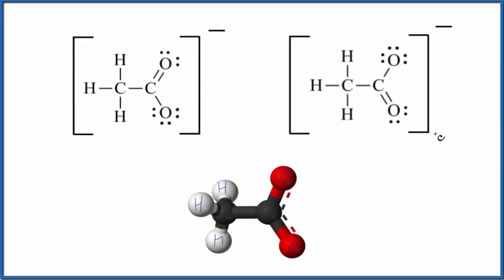In this video, we'll look at the resonance structures for CH3COO-. This is the acetate ion. So for acetate itself, we have CH3COOH, and this H right here, that's what it loses, and then it becomes this negative ion.